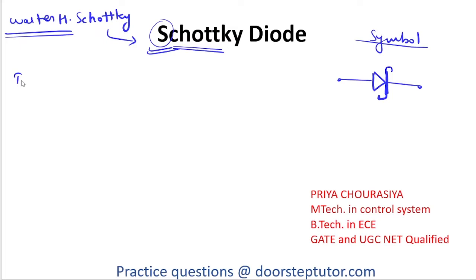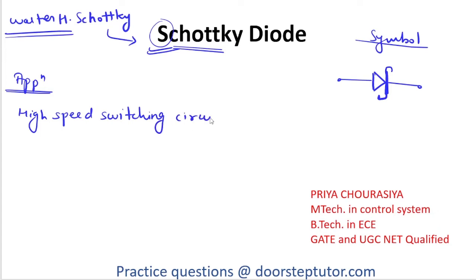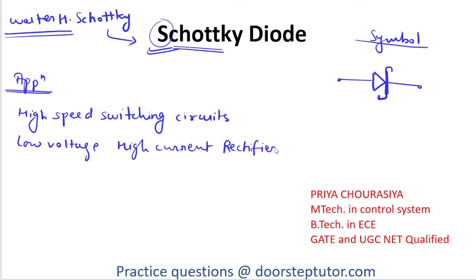The Schottky Diode is used in many applications like high frequency or high speed switching. It can also be used as a low voltage, high current rectifier circuit. So the two main applications of the Schottky Diode are in the switching circuit and in the rectifier. We will see how it is used as a switching circuit and a rectifier, and discuss some concepts related to the Schottky Diode.